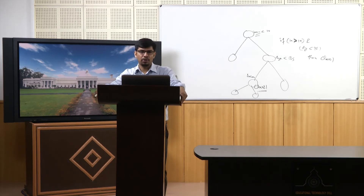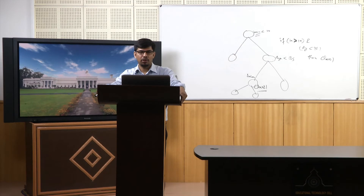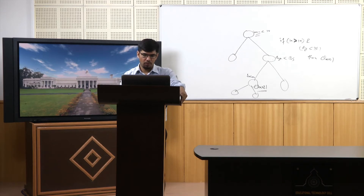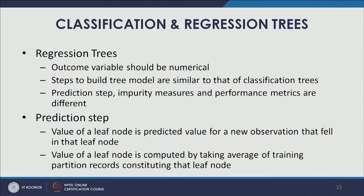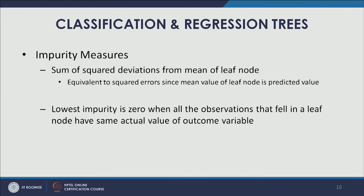Any new observation that falls down to that particular leaf node gets the value of that leaf node as its predicted value. Otherwise, in terms of building the tree, the steps are very similar to what we discussed for classification trees.